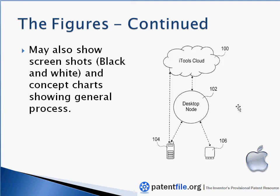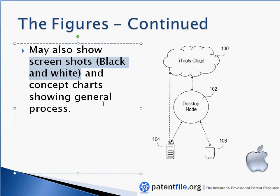The other type of figures you can use in a software patent application are what I call concept figures that maybe show a broader, unique concept. Here's another very early Apple patent where it shows the concept of transferring data between a cloud and a desktop computer. This is something that's commonly done nowadays, but 20 years ago when they filed this patent, this was a really unique concept, and so this is how they chose to show that concept in their patent figures. You can also show screenshots — they should be black and white screenshots — and if those screenshots of your software program show the unique features of it, you can include those as figures as well.